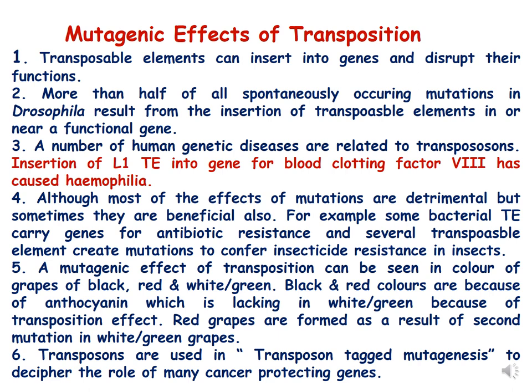The mutagenic effect of transposition can also be seen in the color of grapes — black, red, and white or green. Black and red color are due to anthocyanin, which is lacking in white or green grapes because of a transposition event. Red grapes are formed as a result of a second mutation occurring in white grapes.